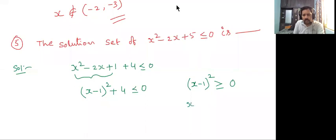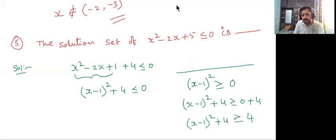So now x minus 1 whole square, add 4 on both sides. So x minus 1 whole square plus 4, it is always greater than or equal to 4. So this is correct.